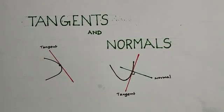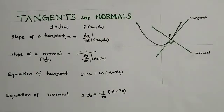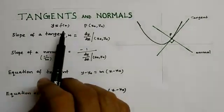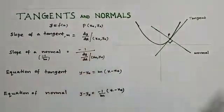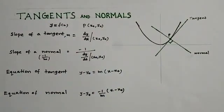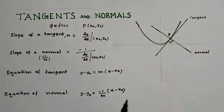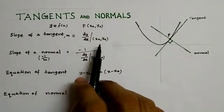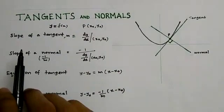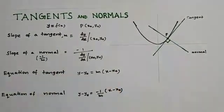Here are the important equations. Let y equal to f be the equation of the given curve and p be a point on it. Then, slope of the tangent to the curve at p equals dy by dx at (x0, y0). So slope of tangent m equals dy by dx at (x0, y0).